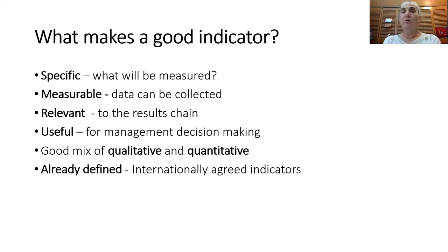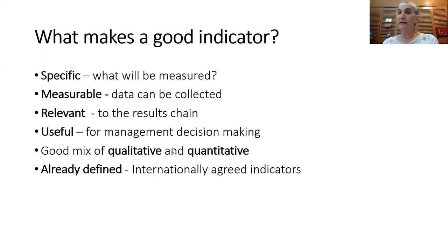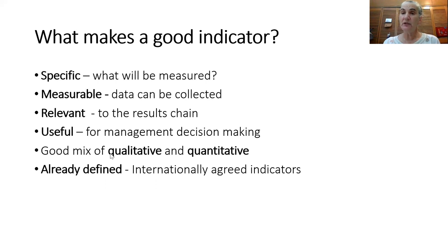What makes a good indicator? It should be specific so you can measure it and you need to know what kind of data you can collect for it. It should be relevant to the results chain to show that you're actually having an effect with your project. It should be useful for making management decisions. Indicators should include a mix of qualitative and quantitative data. Qualitative data will be something like changes in attitudes or changes in how people perceive things, and that can be assessed via simple surveys. Indicators that have been already defined internationally can be used for making comparisons among different projects.